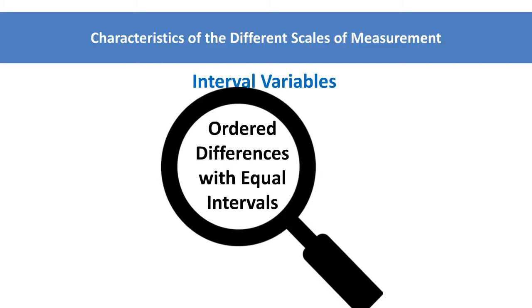Thus, a zero does not mean the absence of an attribute, but rather is a particular other, but arbitrary point on the scale.